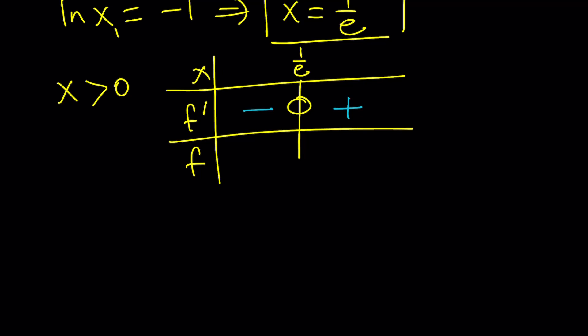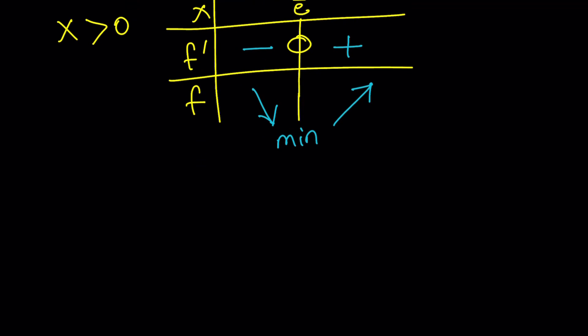You can go from the sign of the first derivative to whether the function is increasing or decreasing. In other words, if the first derivative is minus or negative, our function will be decreasing. And otherwise, it's going to be increasing, which means we have a minimum at 1 over e.